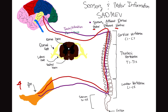Sensory neurons always start at whatever organ we're sensing something from — it doesn't start from the brain. Sensory neurons always start at some kind of organ: your arm, your leg, your back, somewhere that's not your brain. That always goes up the spinal cord, enters the spinal cord through the dorsal root — the back of the spinal cord — and goes to the brain. Motor neurons always start at the brain. Then they enter the spinal cord, then they exit the spinal cord out the ventral root, or the front side of the spinal cord.